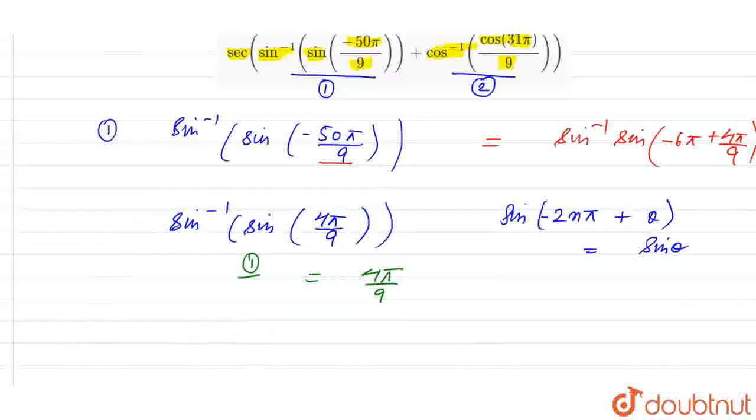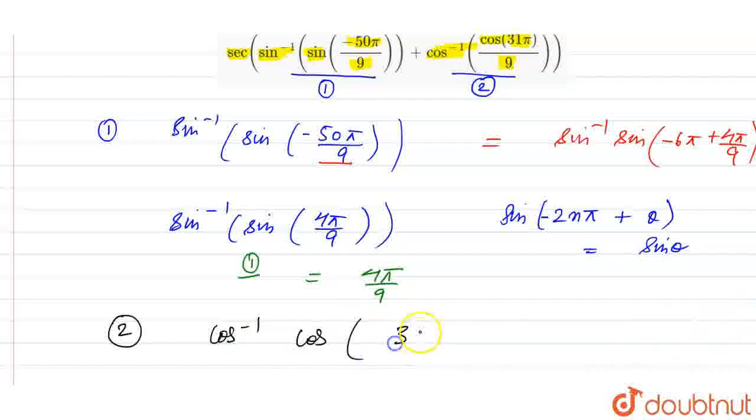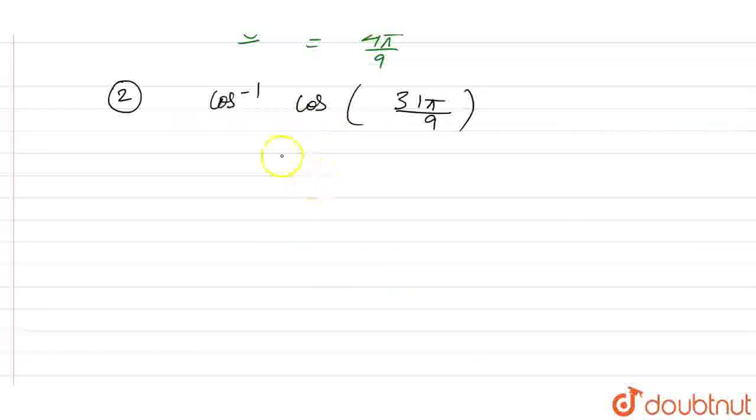Similarly, solving the second part, we have cos inverse of cos of 31 pi by 9. We can write this as cos inverse cos of 4 pi minus 5 pi by 9.